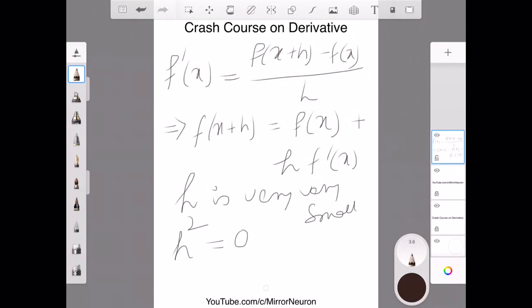So h can be 0.0000, and I keep going with, say, 100,000 or 1 million zeros, and then 1, and if I take a square of that value, then it's going to be 0. So this is the additional point that we should keep in mind.